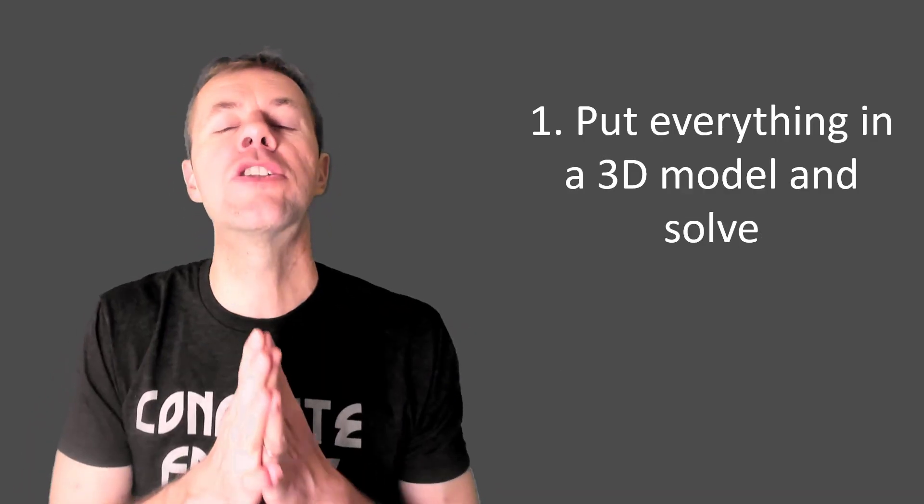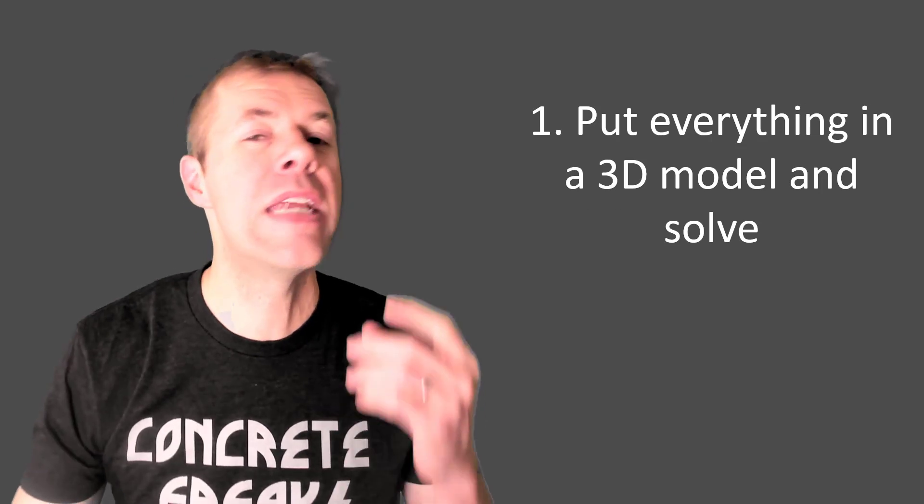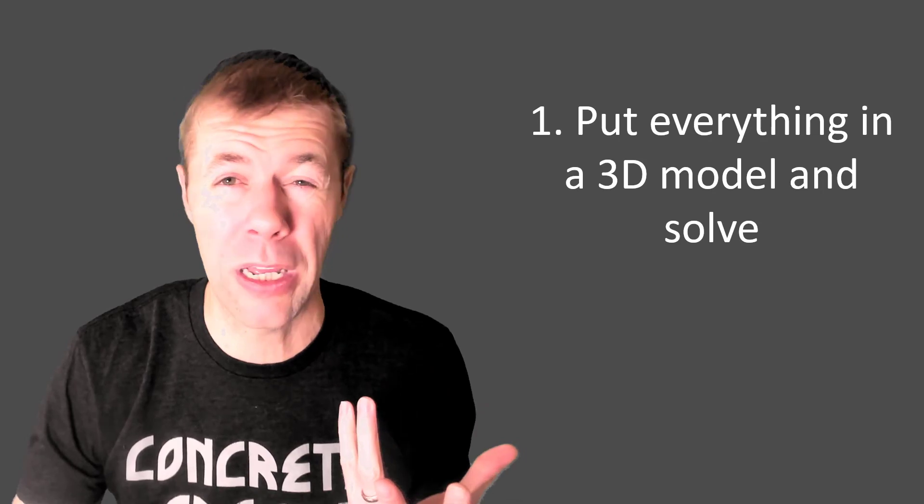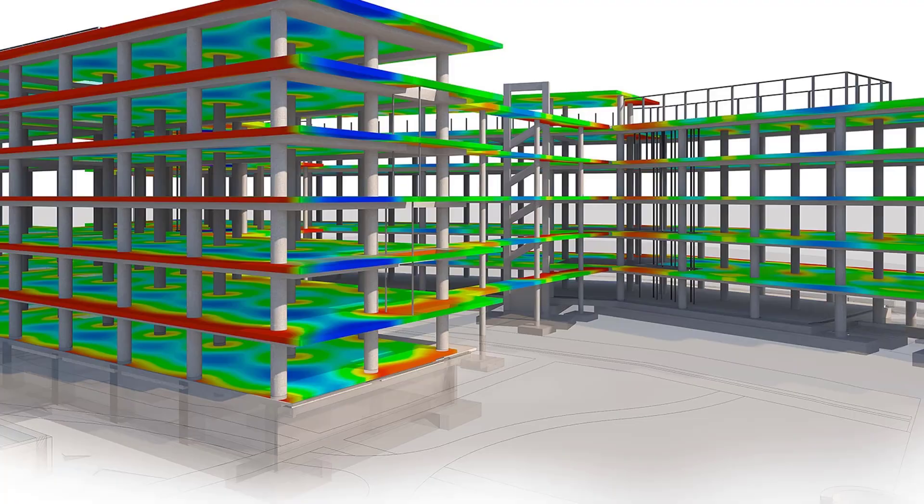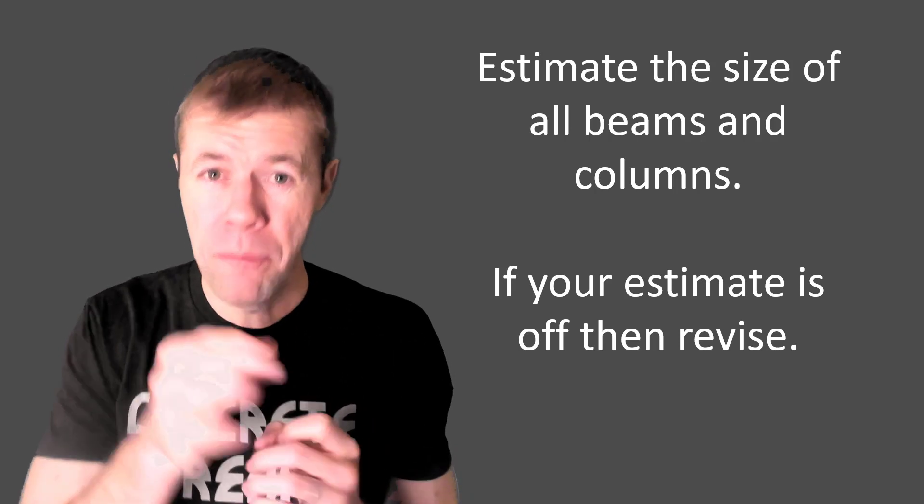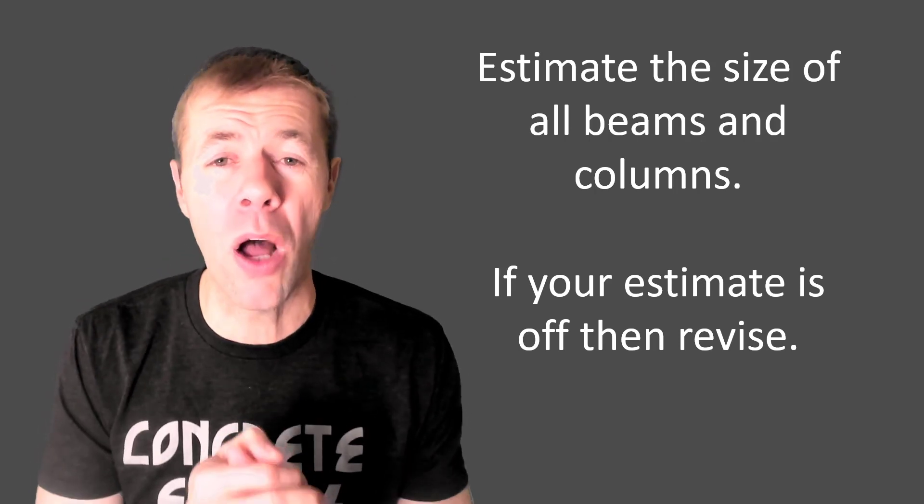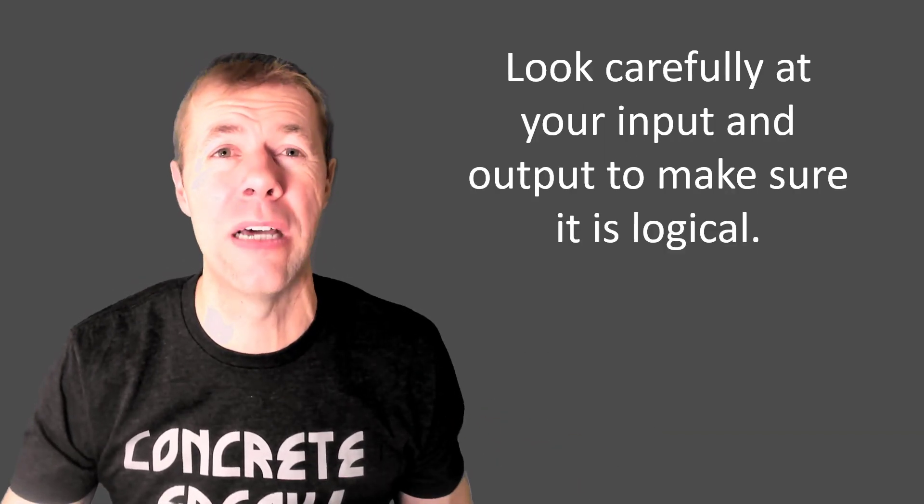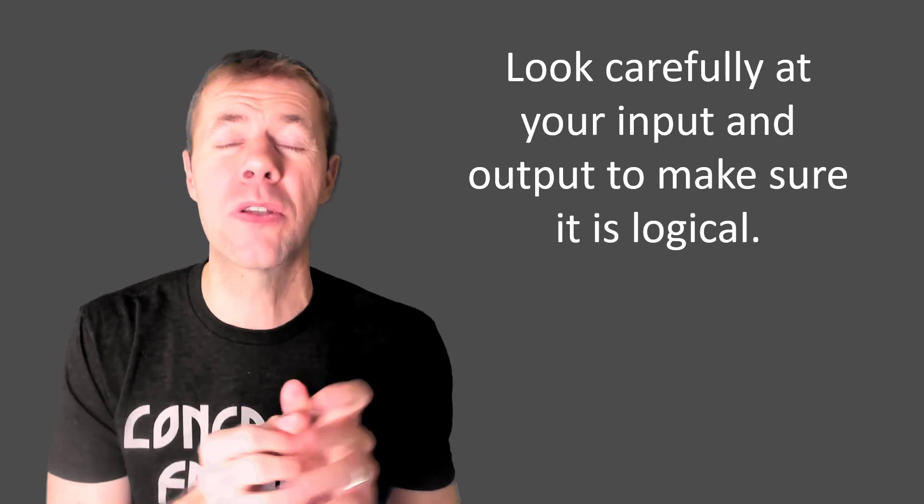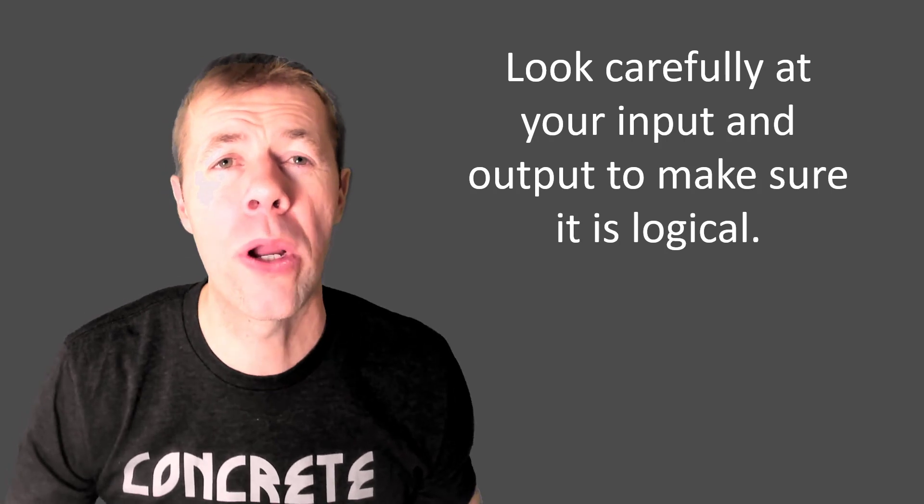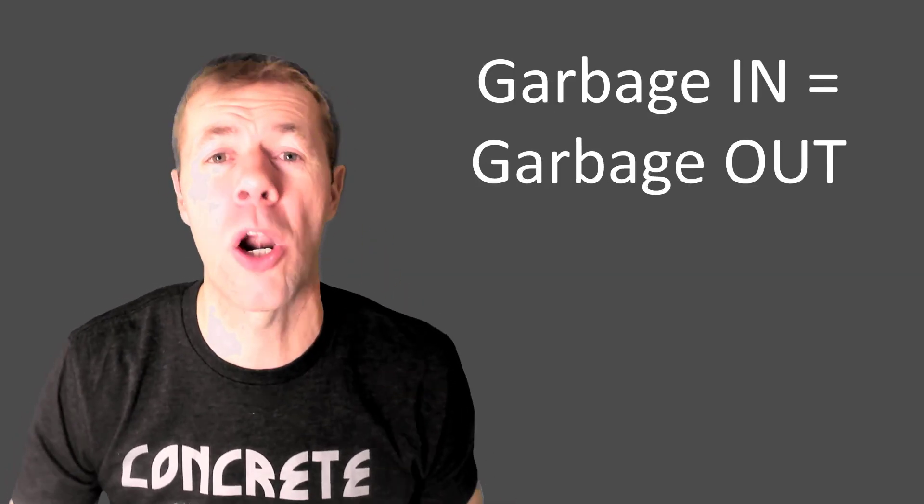So one way to do it is to put everything in a 3D model, then hit the solve button. Lots of young people seem to think this is a great way to go. You put this complicated stuff in, you hit a button, it lights up like fireworks, you get all kinds of stuff everywhere. And they think it's awesome. Better be careful. You better make sure you estimate the size of all your beams and columns. And if your estimate's off, you got to go back and revise them. And you got to look carefully at your inputs and outputs to make sure they're all logical. You don't have any errors or any other mistakes or anything else going wrong. Because remember garbage in equals garbage out.